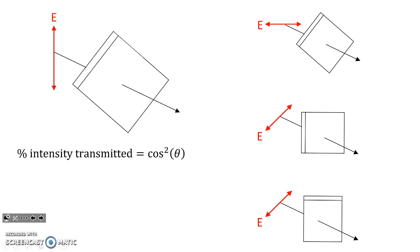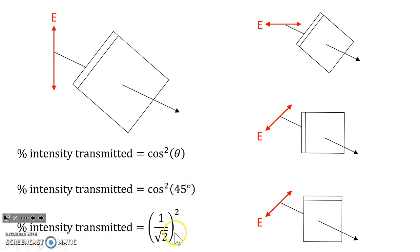And so the intensity transmitted will be cosine squared of 45. Cosine of 45 is 1 over radical 2, and when you square it, you get 1 half.